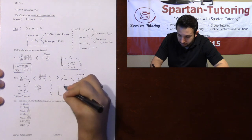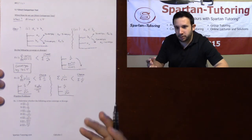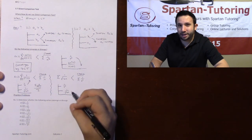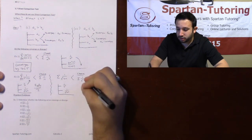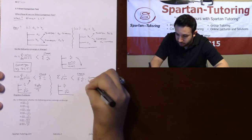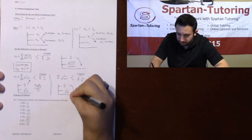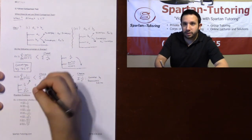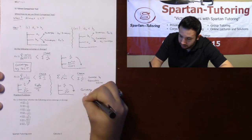One over two to the N converges by geometric series — remember, geometric series may still come into play here. The ratio R of this is less than one, so it converges. And since one over two to the N converges and is bigger, the sum of one over (two to the N plus N) must also converge and be finite. So number two converges by the direct comparison test.